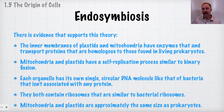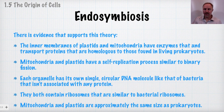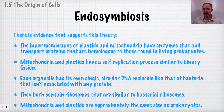Evidence supporting the theory of endosymbiosis includes: the inner membranes of plastids and mitochondria have enzymes and transport proteins homologous to those found in living prokaryotes; mitochondria and plastids have a self-replication process very similar to binary fission, how bacteria divide today; each organelle has its own single circular piece of DNA, just like a bacterium, with the ability to self-replicate; and both organelles contain their own ribosomes, which are very similar to the bacterial 70S ribosomes discussed in an earlier module.